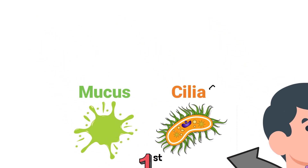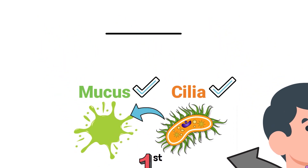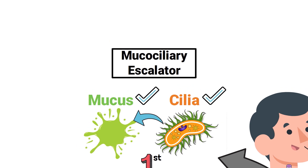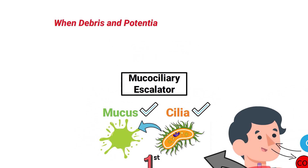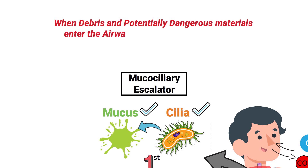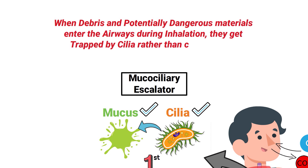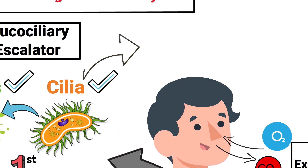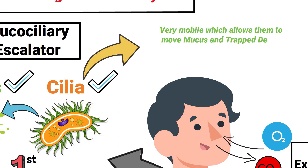Each microscopic cilia structure is covered with mucus, and this combination is known as the mucociliary escalator. When debris and potentially dangerous materials enter the airways during inhalation, they get trapped by cilia rather than continuing to travel throughout the lungs and into the body.